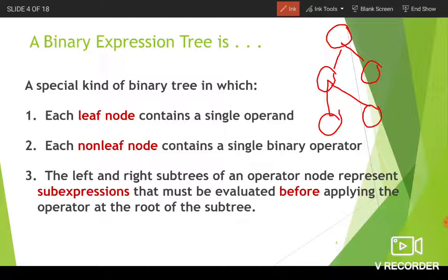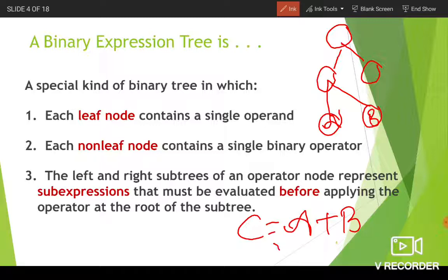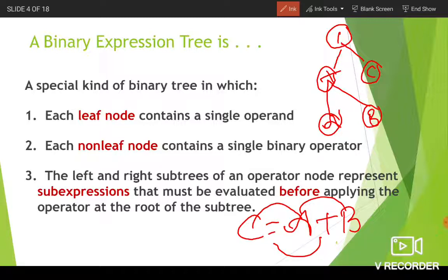When a binary tree is called an expression tree, each leaf node contains an operand. For example, if we evaluate C = A + B, then the operators are equal-to and plus, and the operands are C, A, and B. So in an expression tree, all the leaf nodes must be operands and each non-leaf node contains a single binary operator.